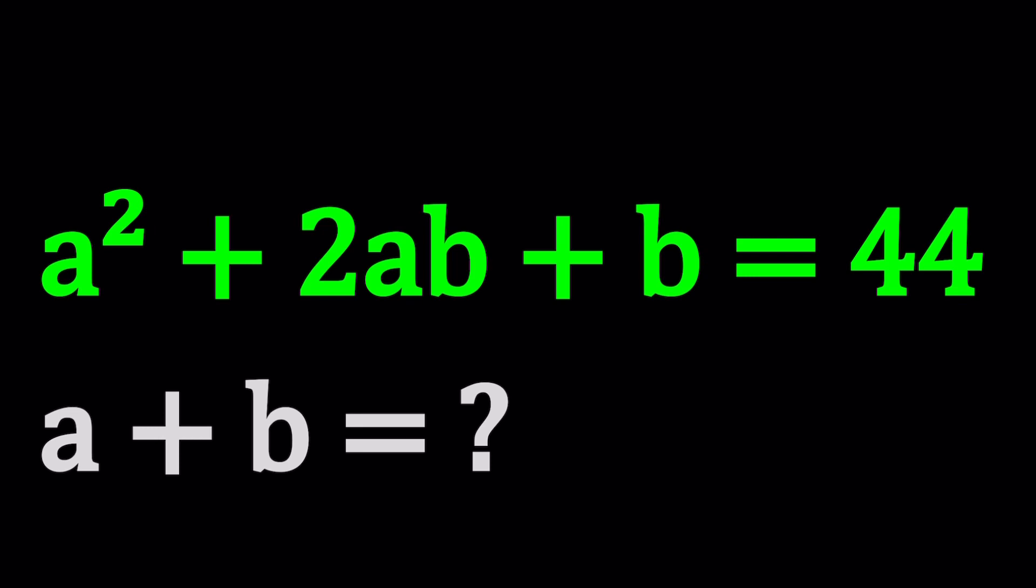But we're not looking for a cheap solution, or we're not looking for a + b in terms of a and b, obviously. Well, even if we tried, we couldn't find it directly. You could write it as a + b = 44 - 2ab, but that's not what we're looking for. And we can't even do that for this problem because of a². So what do we do?